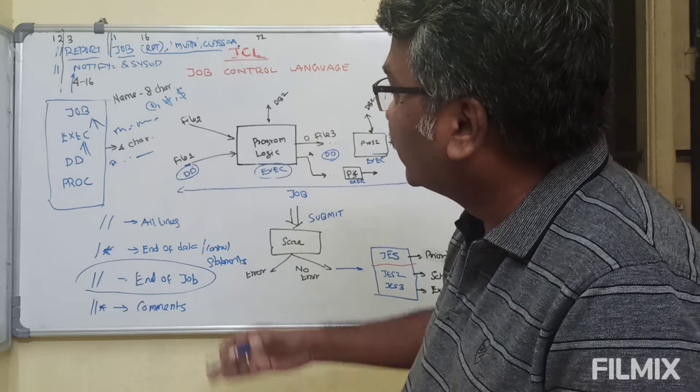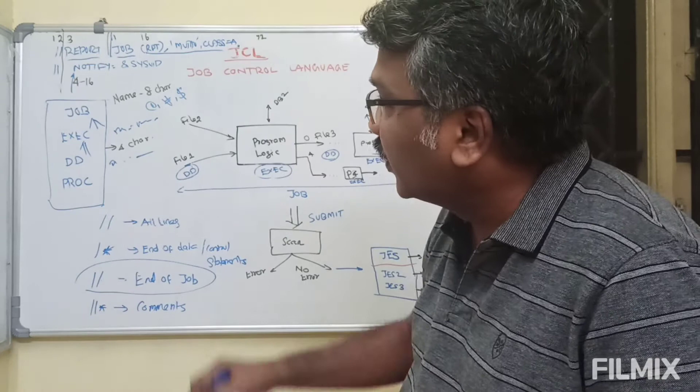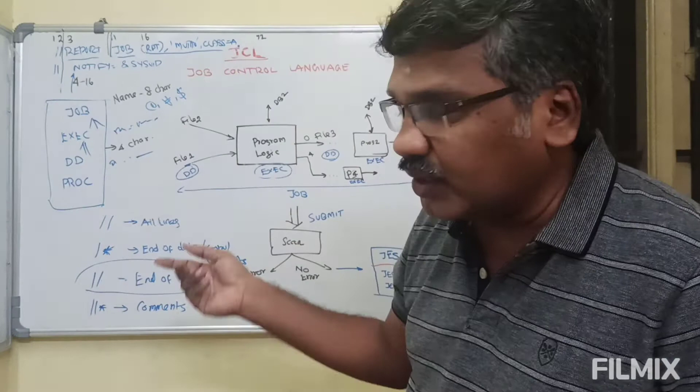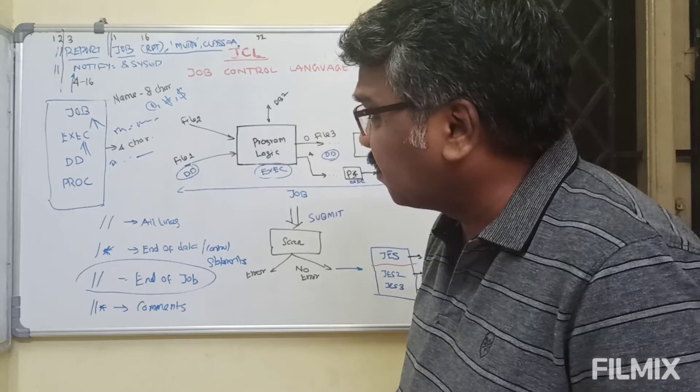You can code from column one to seventy-one. If you need to continue, you end the statement with a comma, and on the next line anywhere between columns four to sixteen you can start the next parameters of a particular operation.